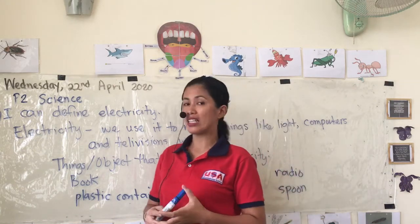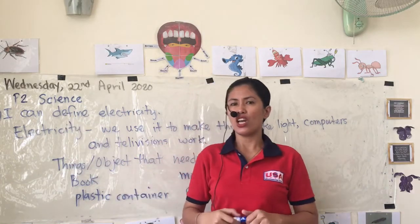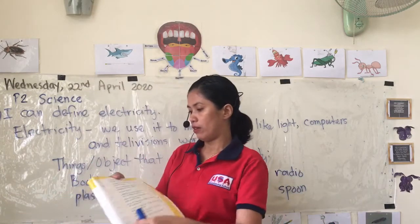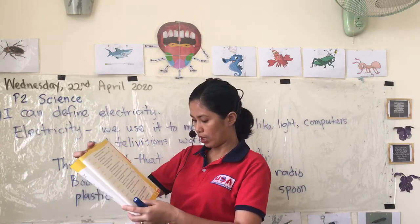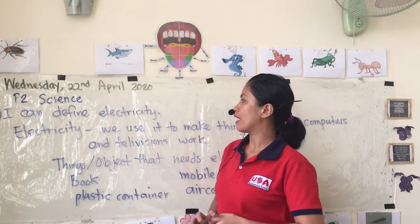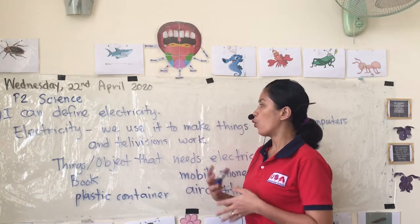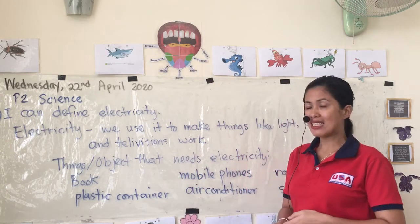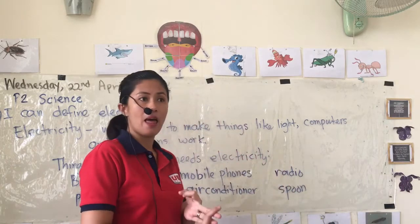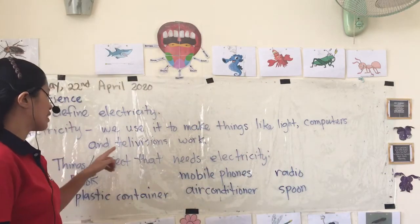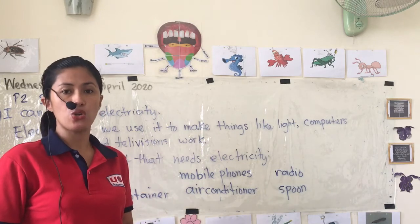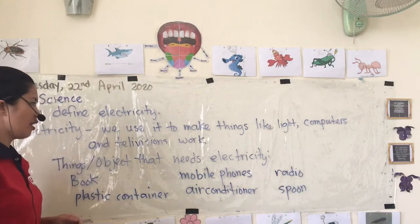Our learning target today is: I can define electricity. In your science learner's book, you can find the definition of electricity on page 73. Electricity is what we use to make things like fluorescent lights, light bulbs, desk lamps, computers, and televisions work.